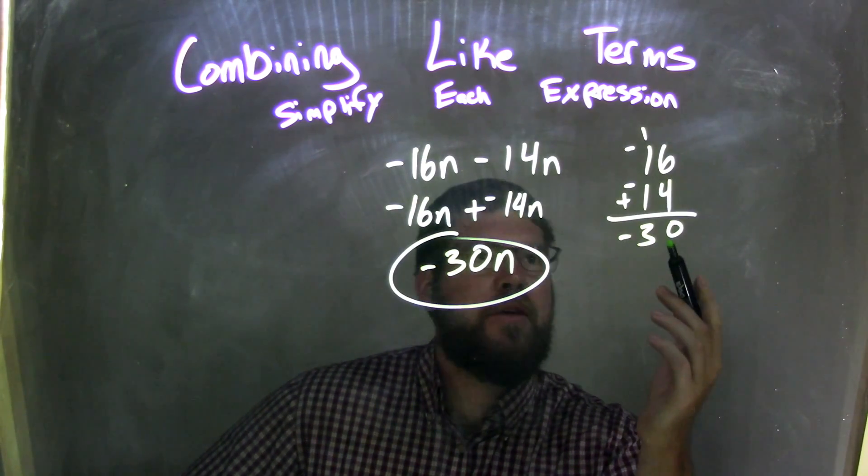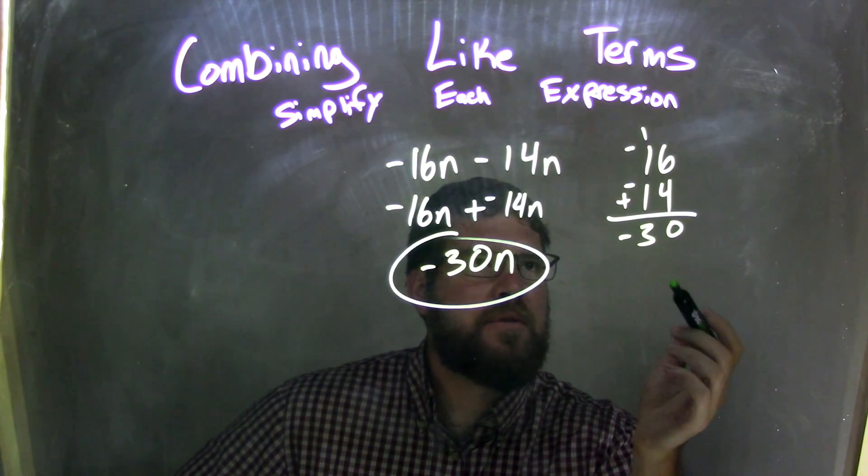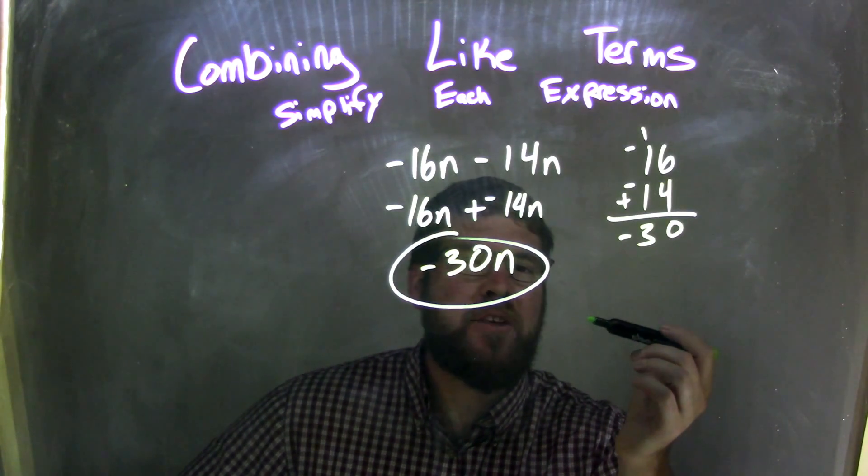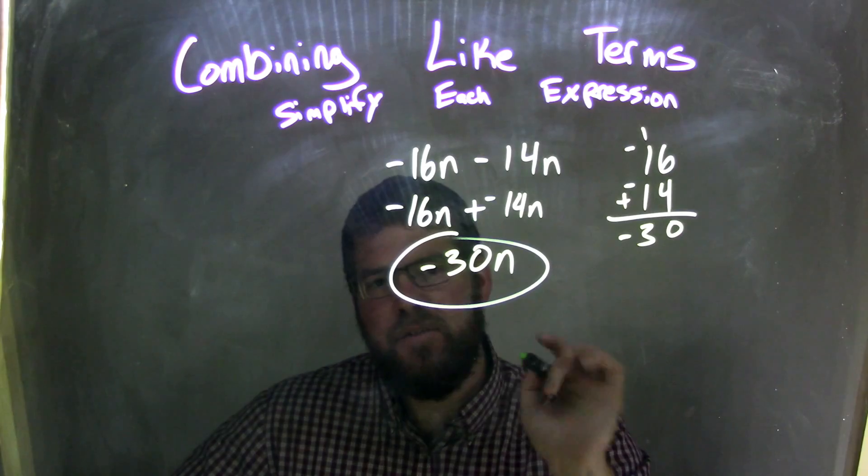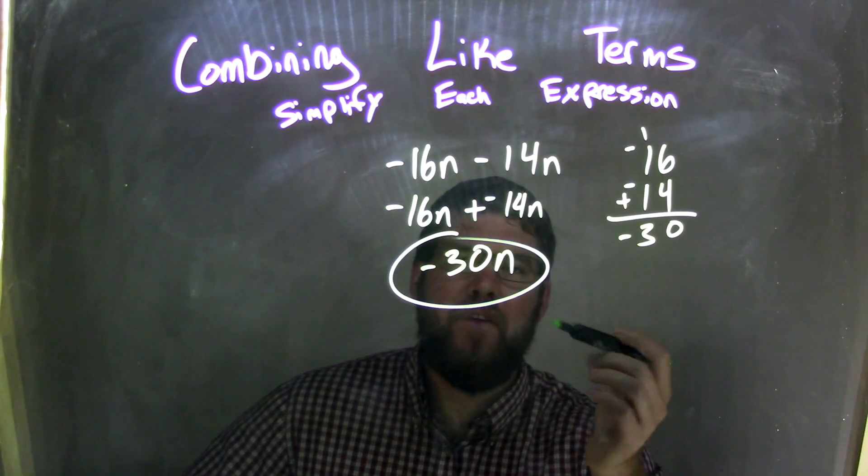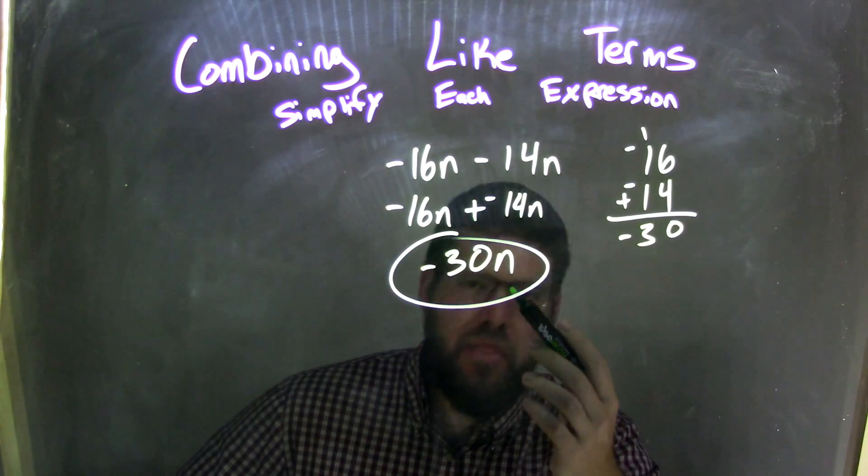Now, I used the traditional method of 16 plus 14: 6 plus 4 is 10, carry the 1, 1, 1, 1, add it all together as 3, and then we know the answer is going to be negative because two negatives added together is still negative. So our final answer here is negative 30n.